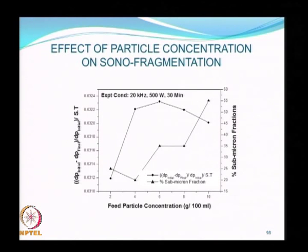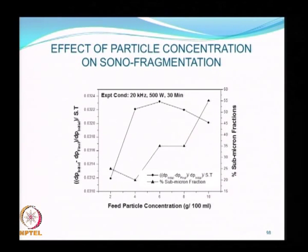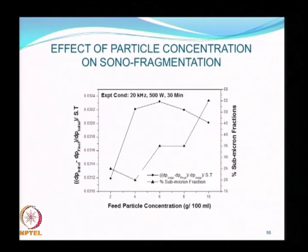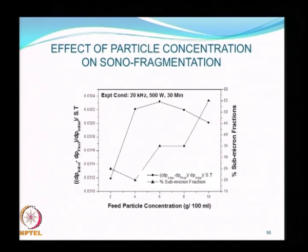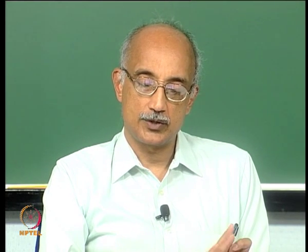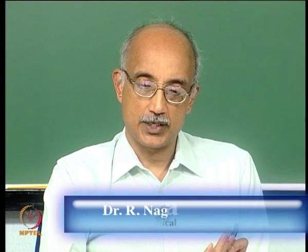The effect of feed particle concentration on size reduction is not a monotonic relationship. The fragmentation rate expression might suggest that as particle concentration increases, size reduction efficiency keeps increasing; however, there is actually an optimum value of particle concentration at which size reduction efficiency is best—beyond that optimum, efficiency starts to drop. We will pick up from this point in the next lecture, highlighting the influence of feed particle concentration on size reduction efficiency.